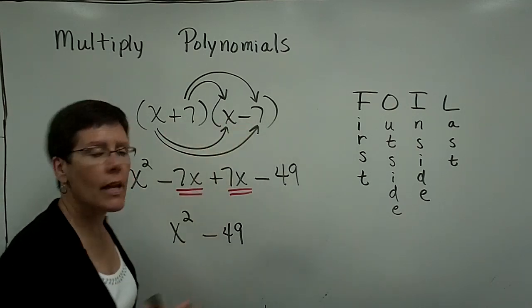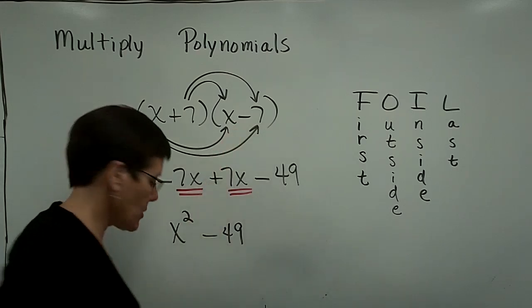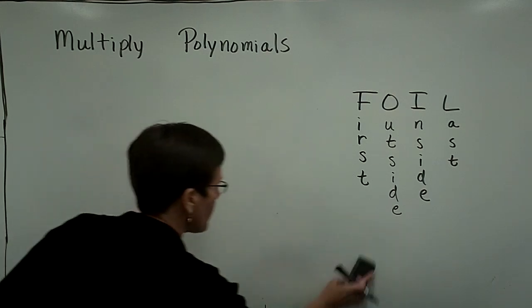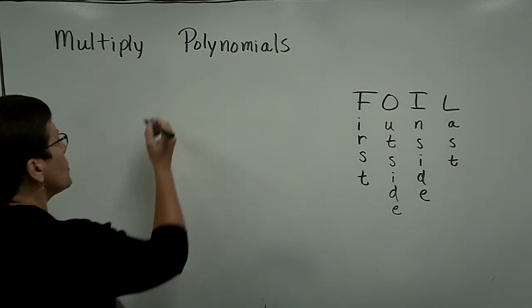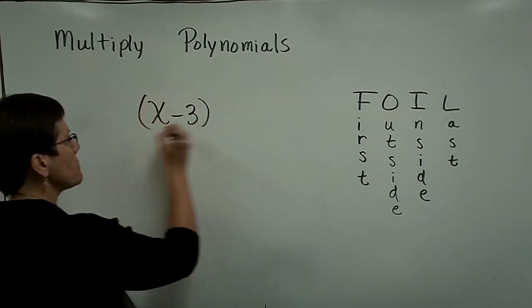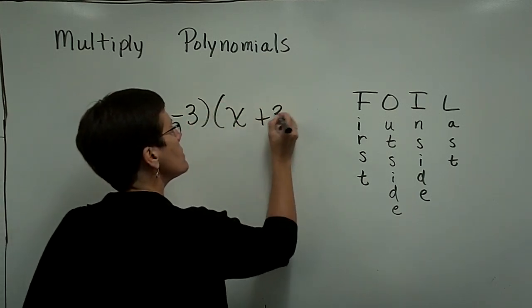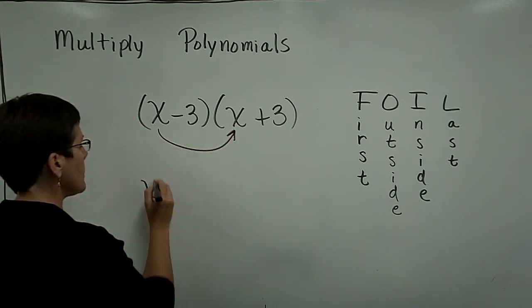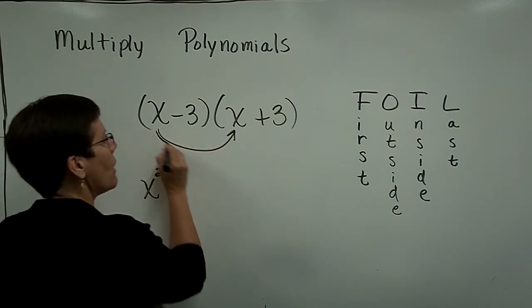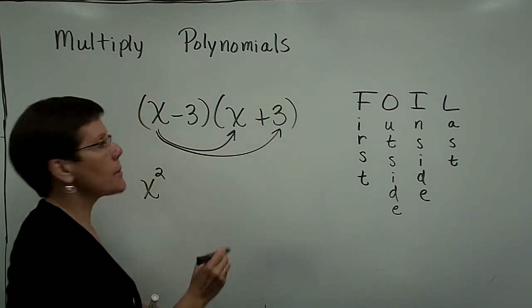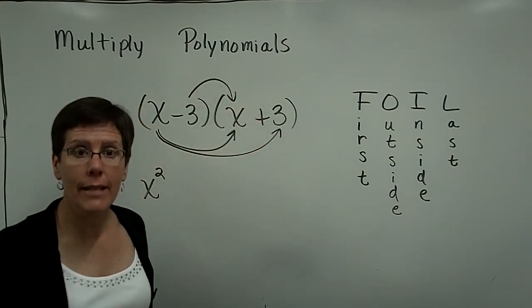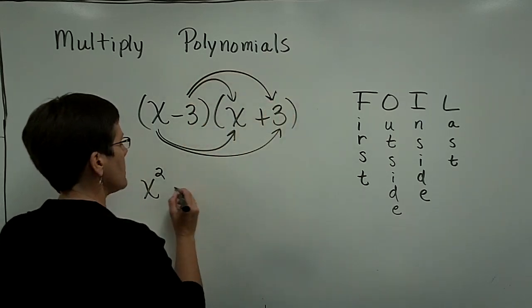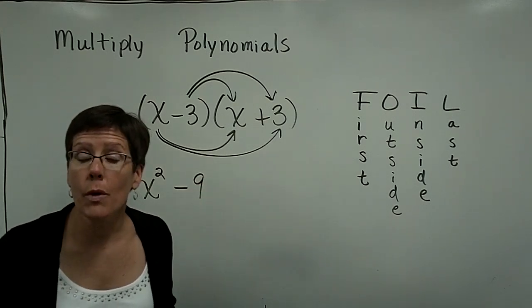Multiplying two binomials together where they are the sum and difference of like terms. From now on, if you could, just go right to the answer instead of having to do all that work. So if you have x minus 3 times x plus 3, and you wanted to multiply those two together, the x times the x is x squared. I don't write down this 3x and this minus 3x because they collect and add to be zero. So I just write down my last term, a minus 3 times a positive 3 is a minus 9. And I'm done with it.